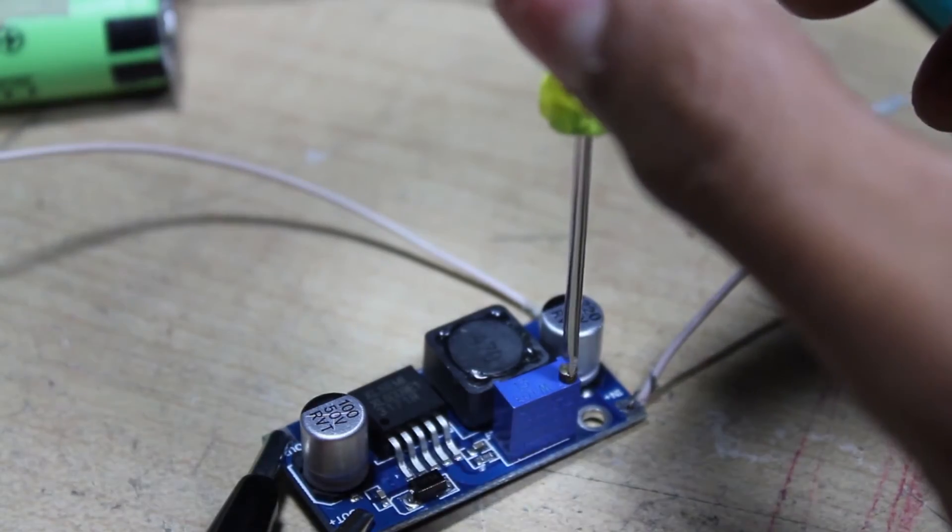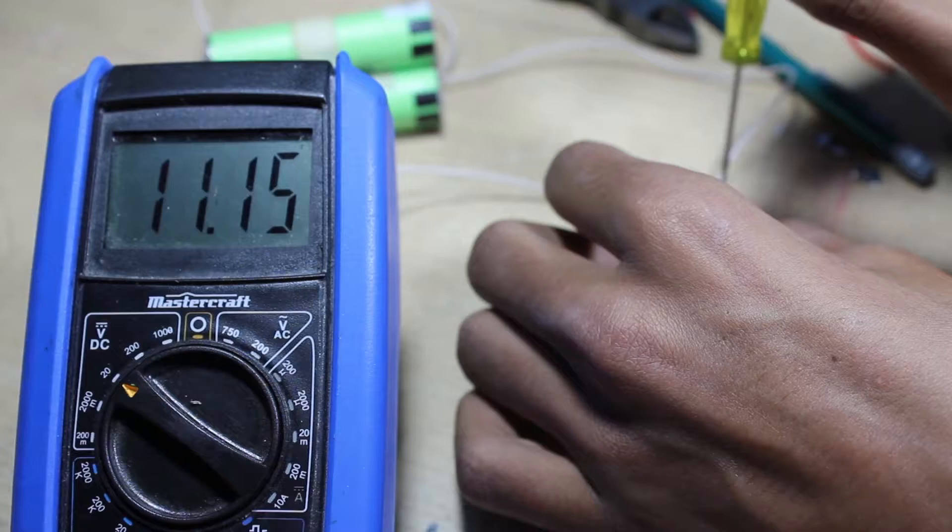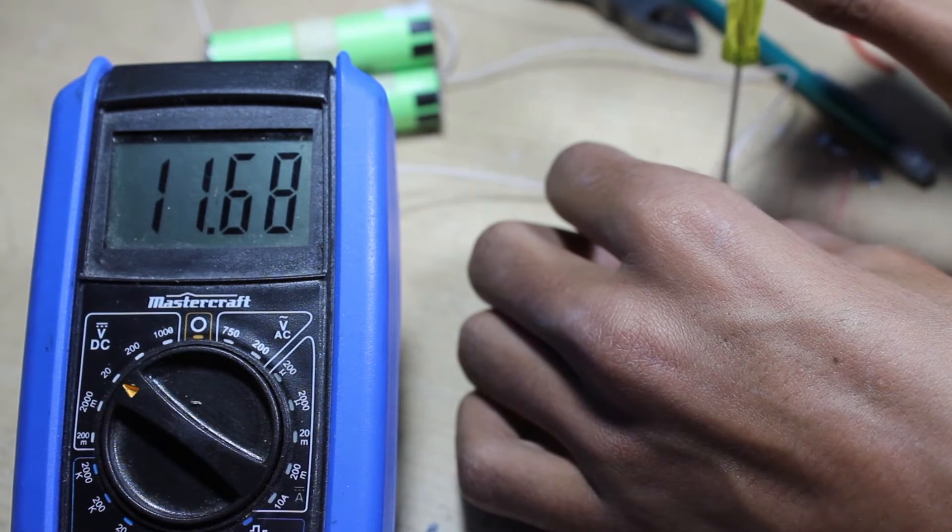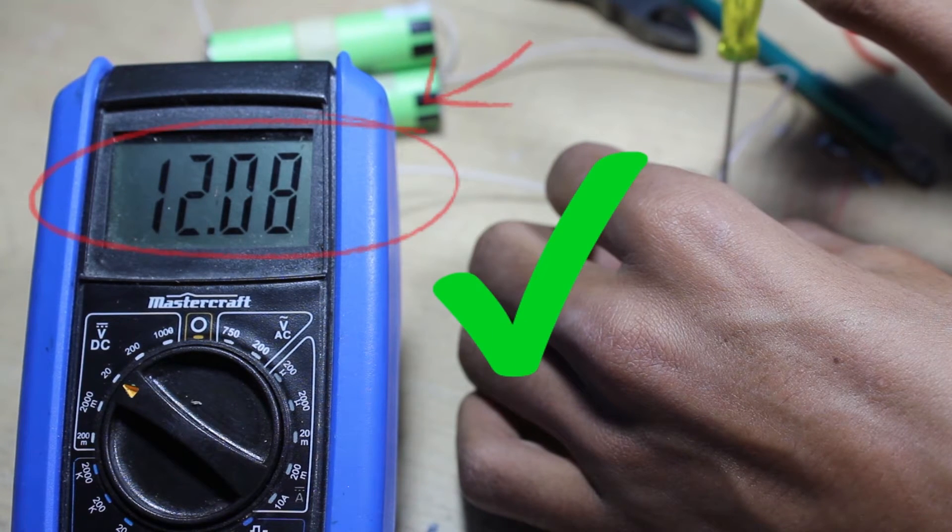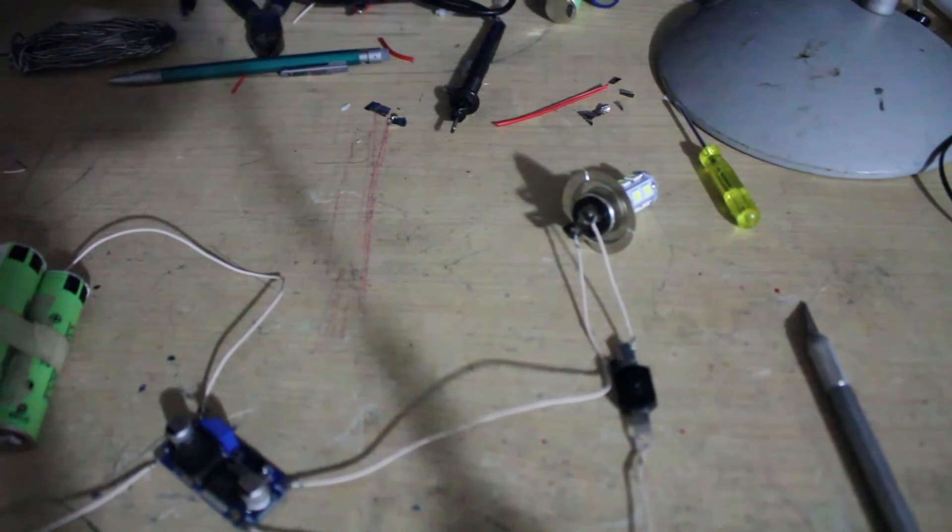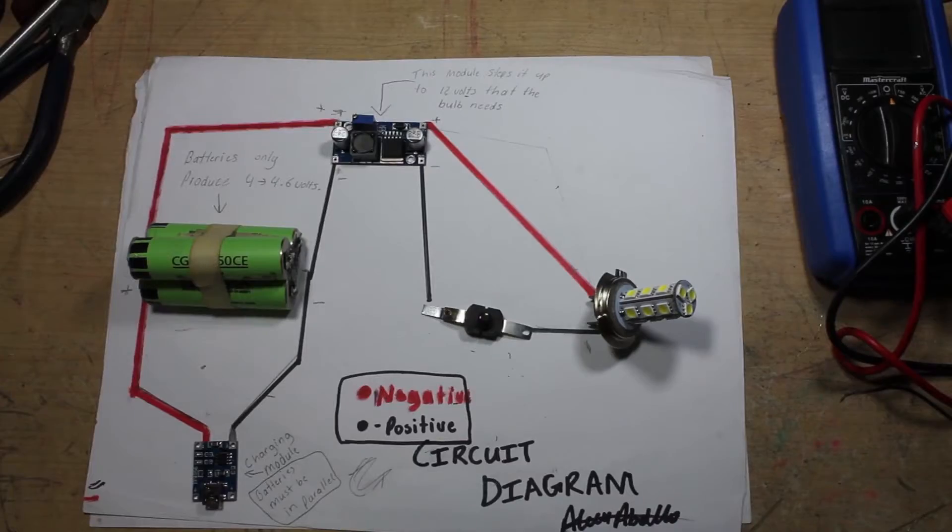Because I'm using an adjustable step-up transformer, I need to set the output voltage of the step-up module. This is done by turning the potentiometer clockwise and anticlockwise. Once it puts out a constant 12V, I attach the LED bulb and the switch in series to be able to turn it on and off.